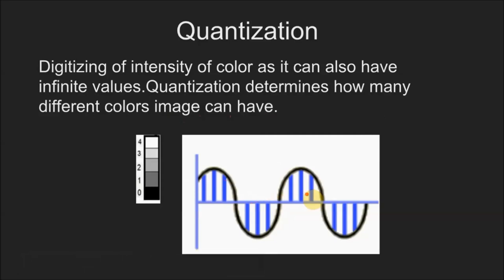If we consider this point, we find that this point is coming at one point something value, but we can't represent the exact value of this region so we consider the value of this region as one. If we consider this point, the value is coming to be two point something, but we will consider this value to be two.